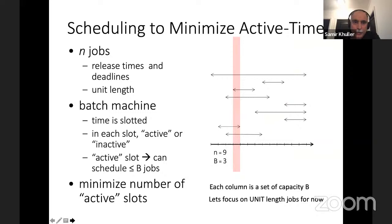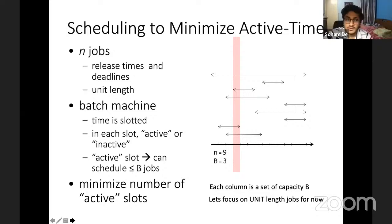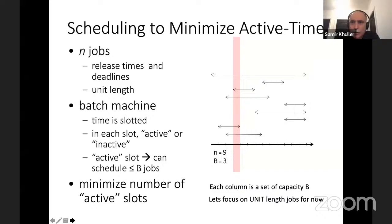Let me talk about the actual algorithm. We can think of this problem in relation to set cover. In set cover, you have an abstract collection of elements and a collection of sets, and you try to choose some sets to cover all the elements. Here, every column of time corresponds to a set, and picking a column corresponds to choosing a set — the elements that belong to it are the jobs whose windows overlap with that time slot. Each column has a capacity, so unlike normal set cover where picking a set covers all its elements, here there's a bound B on how many elements you can cover.